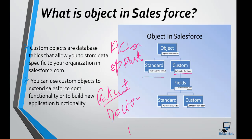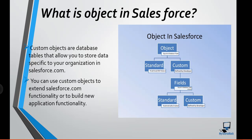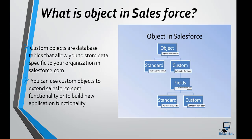Similarly, if you're working in a real estate company, you would create a table to store information about properties available for sale. You'd create a table called Properties with fields for property address, number of bedrooms, number of bathrooms, and square footage. So based on your company's needs, you create custom objects.